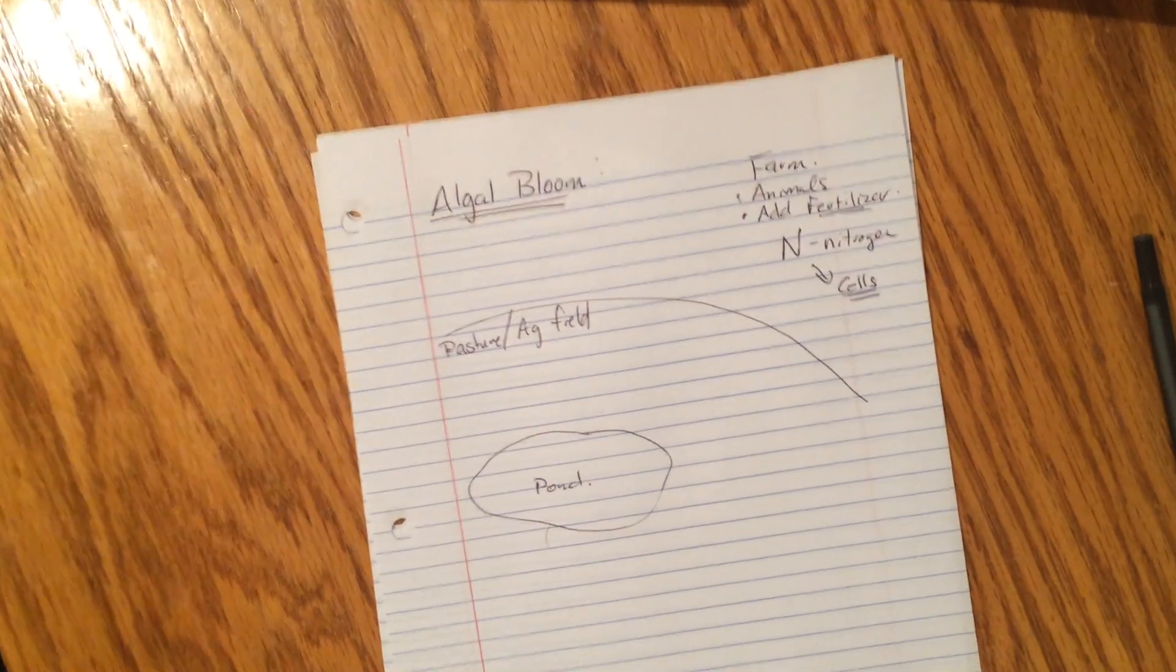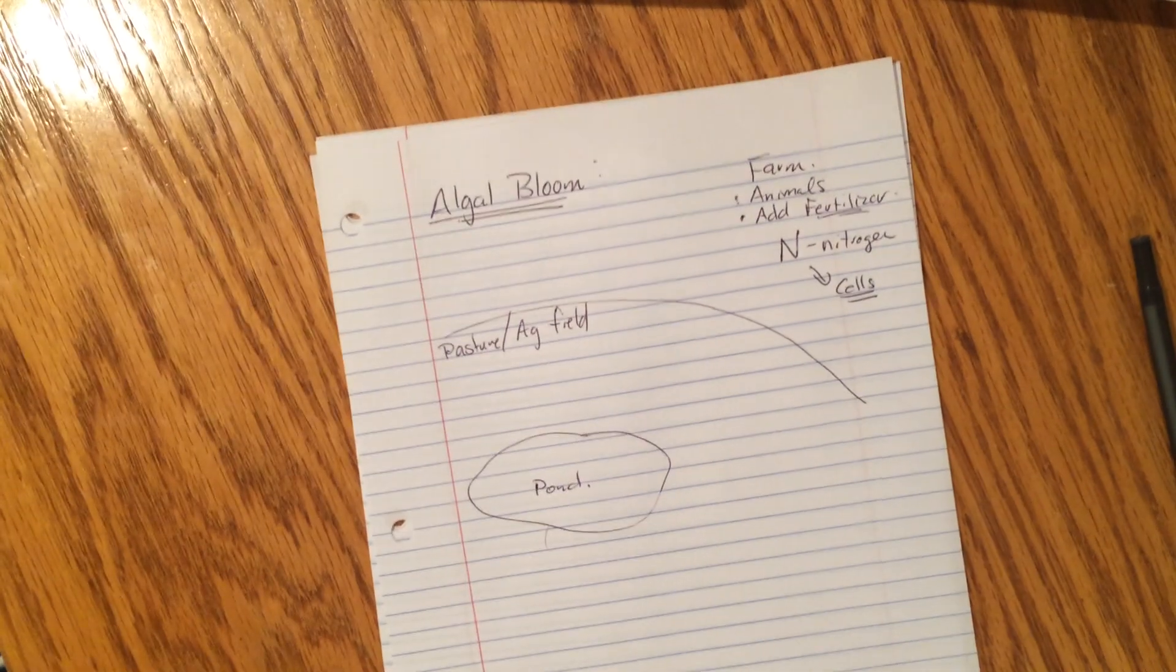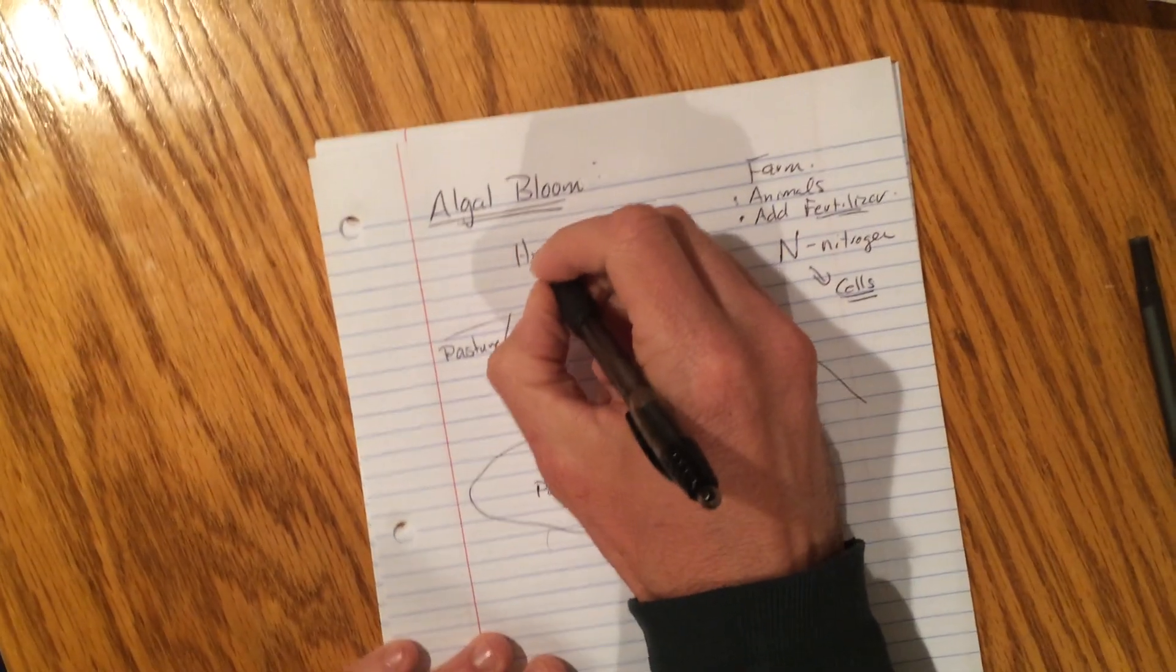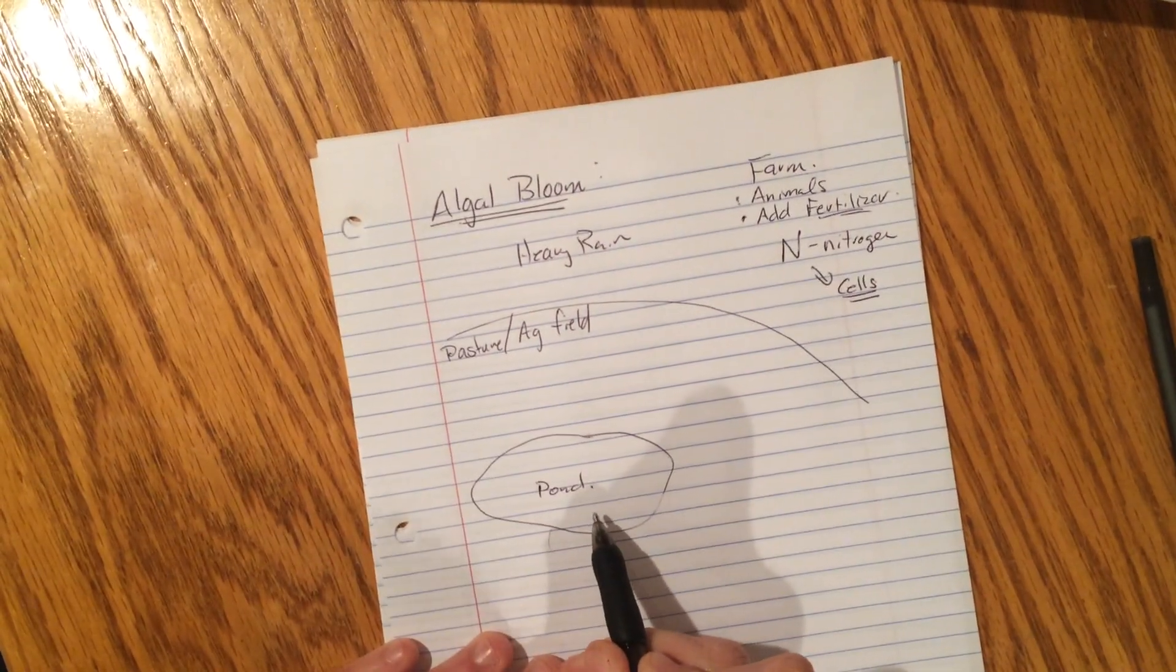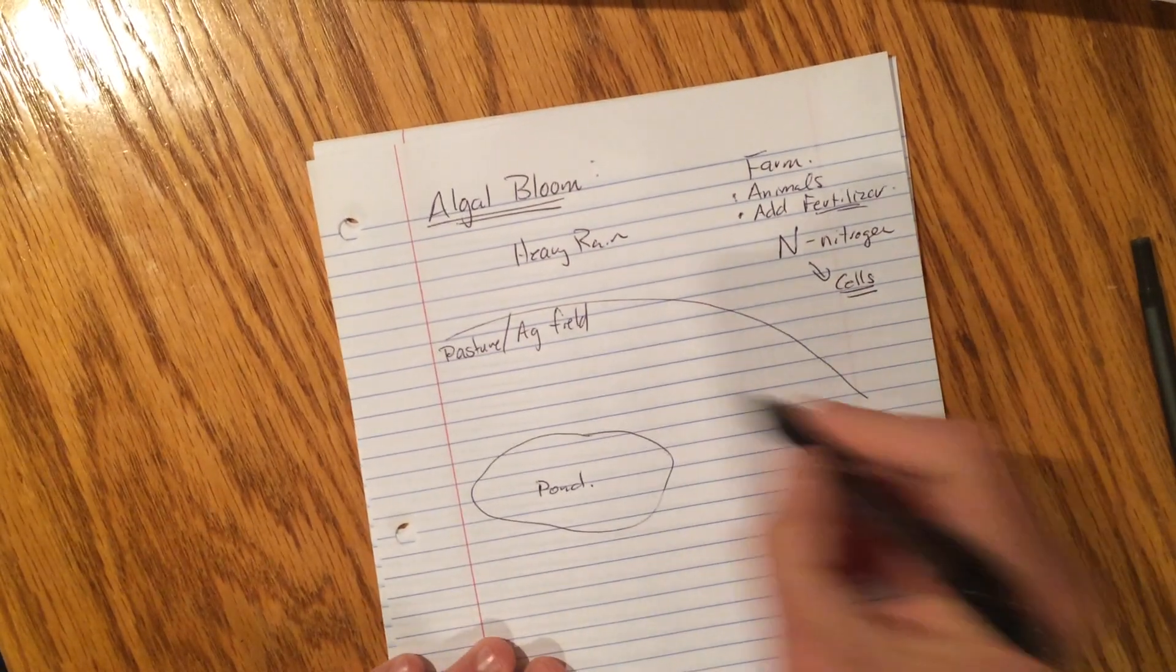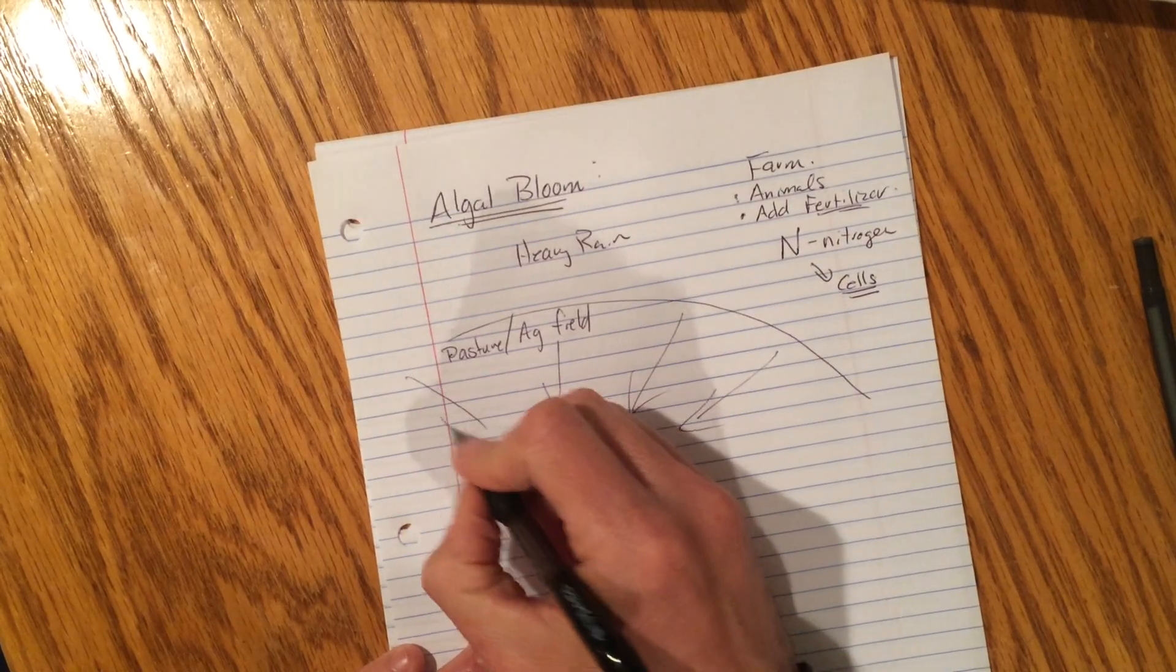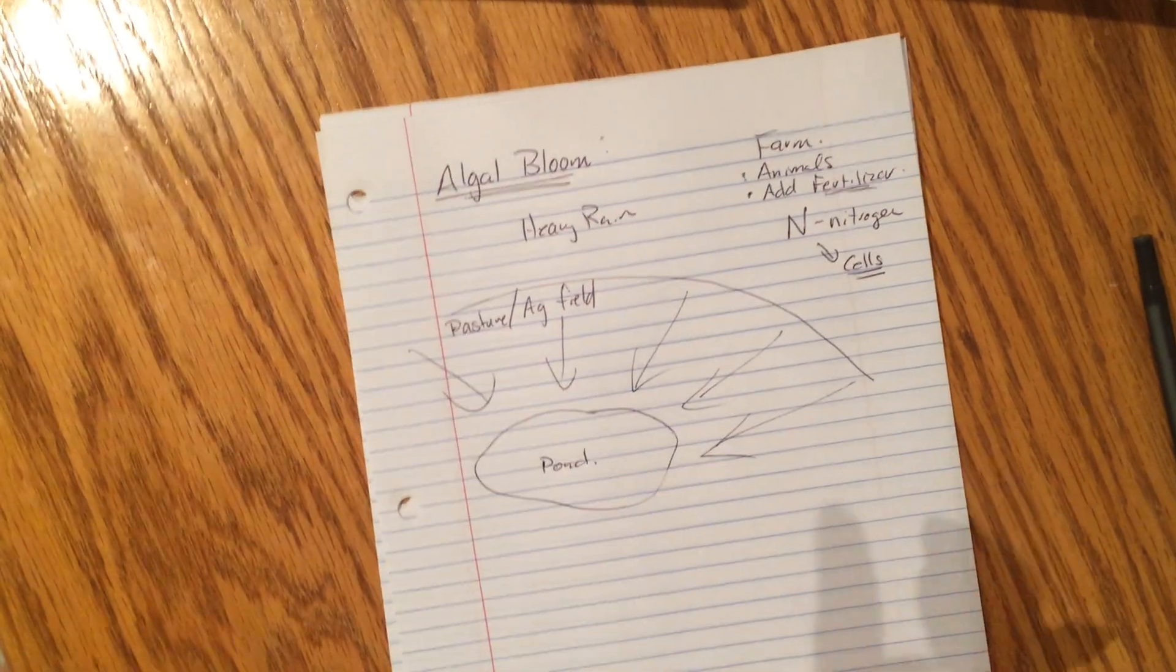Now, where am I going with this? Well, let's take, for example, a farmer has just fertilized this field. Then you get a heavy downpour. You get heavy rain. And you guys know on a farm, where are all the ponds? They're in the low spots so that they naturally collect water. Right? So when it rains, all of that water is going to find its way into the pond.